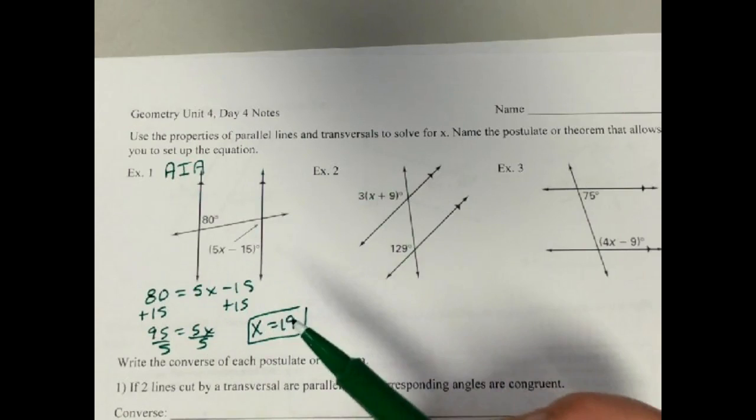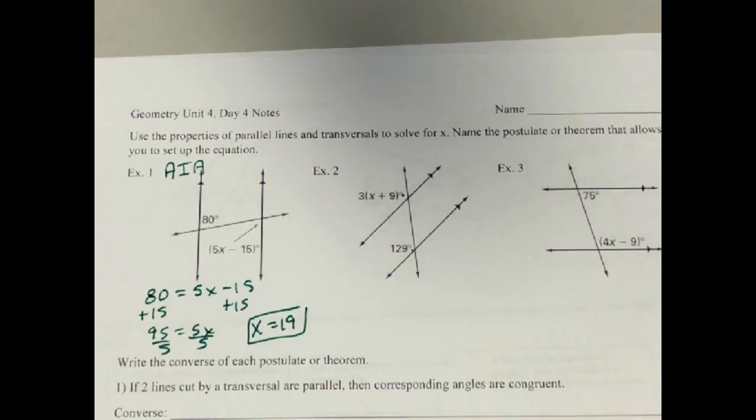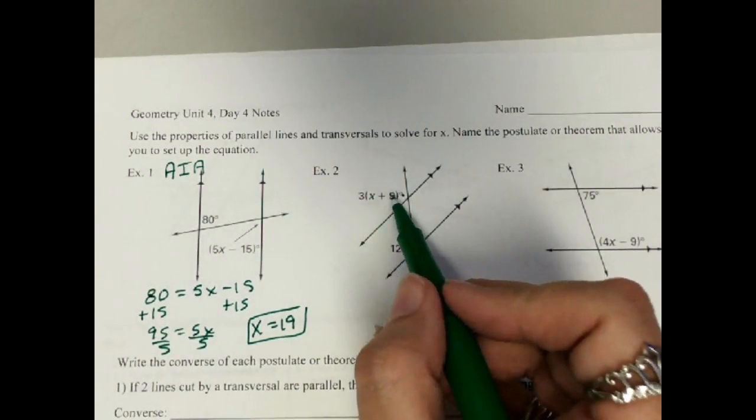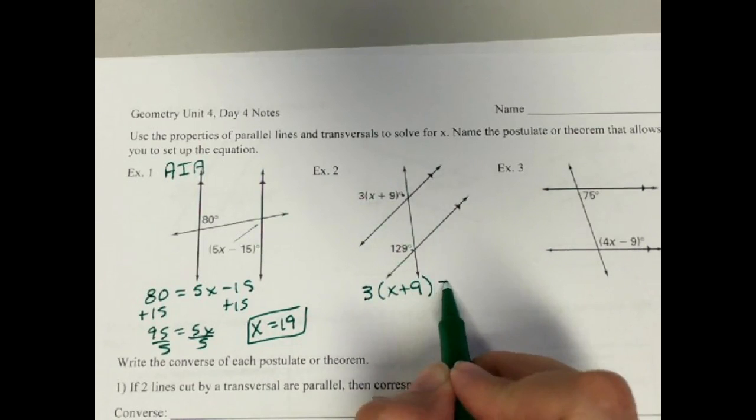Here on this next one, these are in the same position, so these are corresponding angles, where they're in the same position. It's just the same if I slid it over, they would match up. If I slide this one down, it would match up. So this one is congruent to this one. 3x plus 9 equals 129.